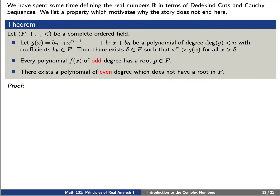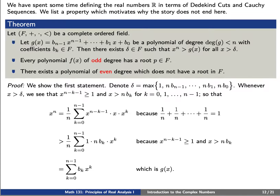Let's discuss the proof of this proposition. We'll show the first statement: we'd like to show that there exists a delta such that x to the n is greater than g of x for all x greater than delta. Let's choose delta to be the max of n times b0, n times b1, n times b sub n minus 1, or 1.